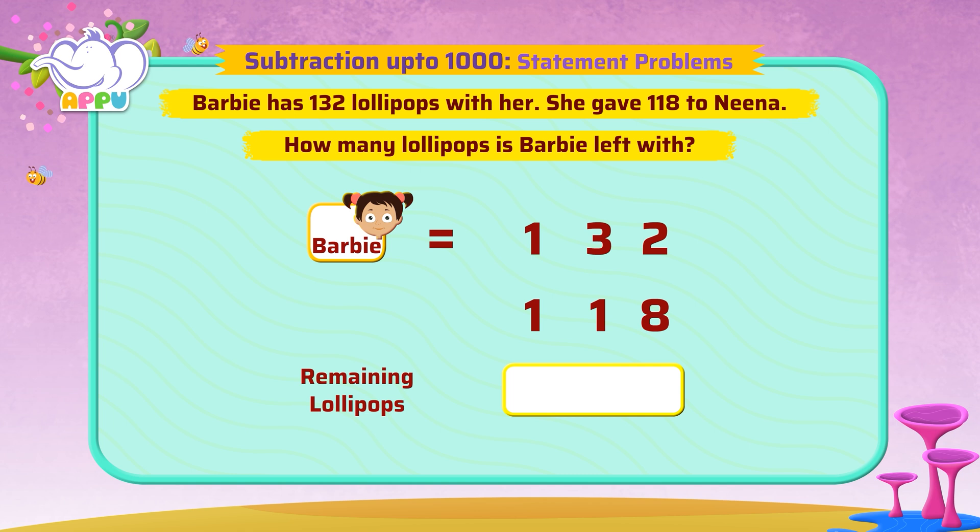To find the number of lollipops Barbie is left with, we have to subtract 118 from 132. That is 132 minus 118.